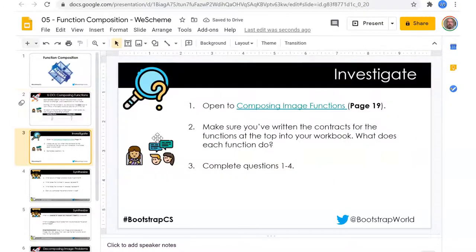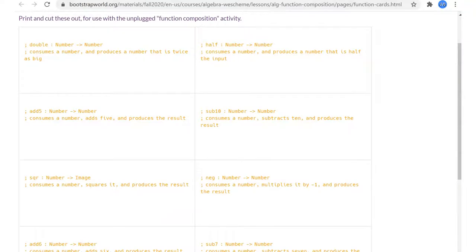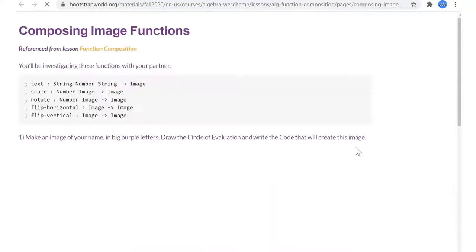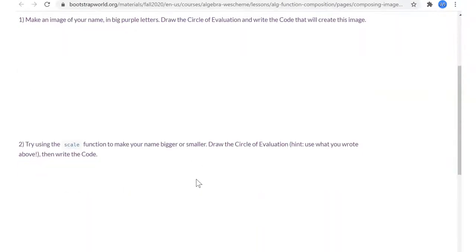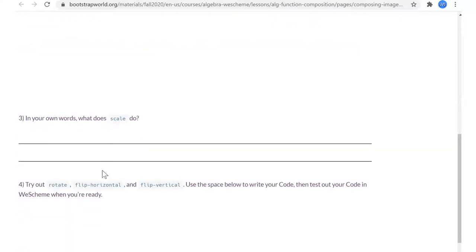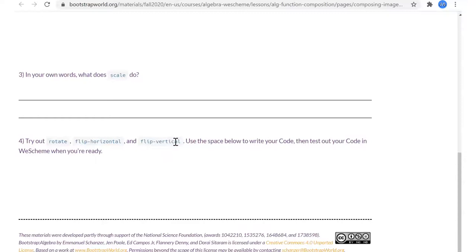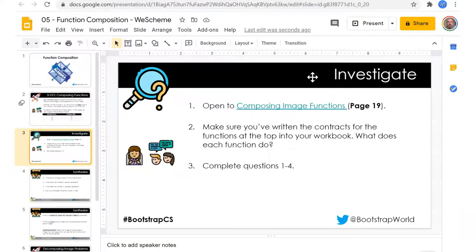Investigate, open page 19. You'll be investigating these functions with your partner. Make an image of your name in big purple letters, draw the circle of evaluation that will create this image. Big purple letters, so we're going to make some text like a big. To make your name bigger or smaller, in your own words what does the scale do? I think this will be a you do also.